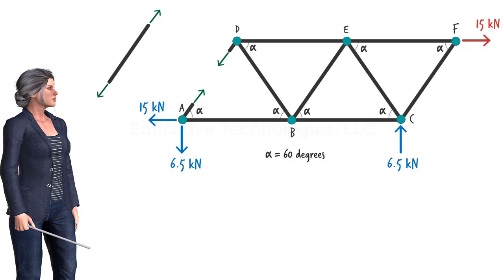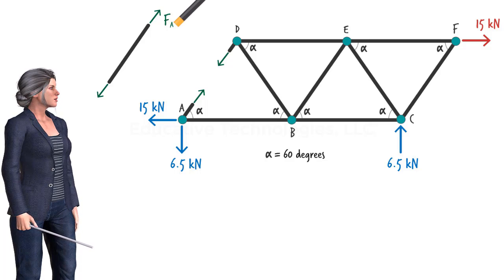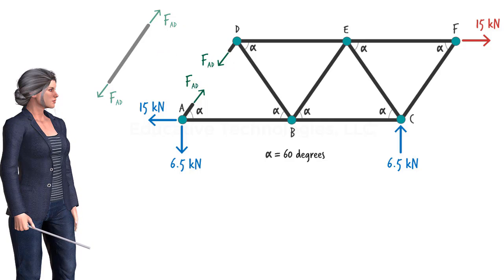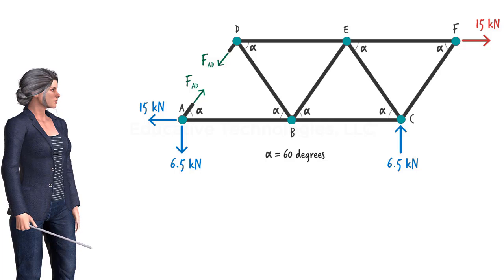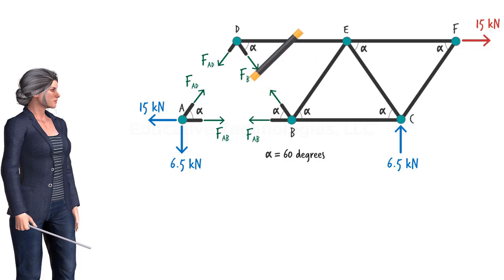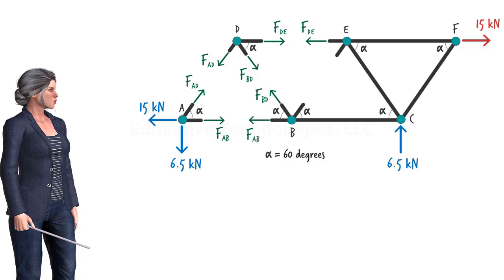Further, since these arrows refer to the same force, they all have the same magnitude. Let's refer to the force in member AD as FAD. Now consider member AB. Assuming it carries a tensile force, we can show the force acting at joints A and B pointing away from the joint. Using the same scheme, we can replace each remaining truss member with two arrows acting at its end joints.